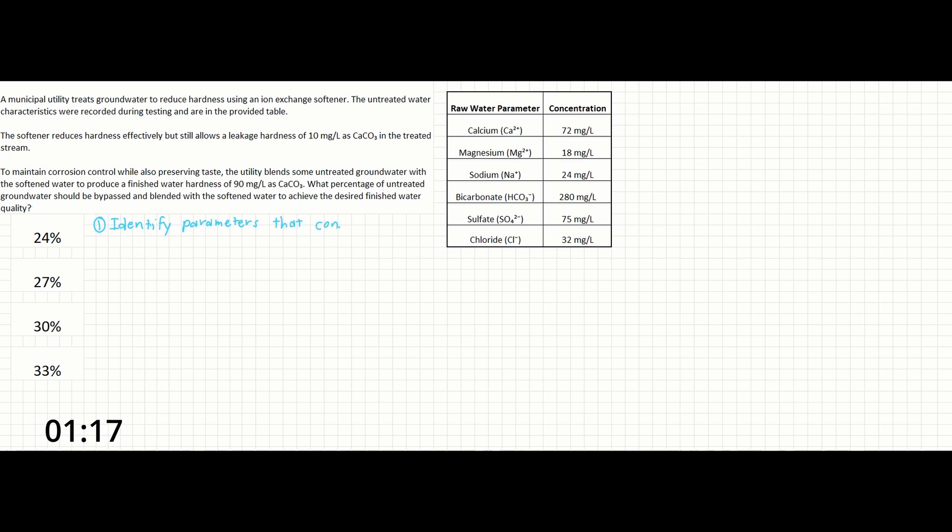Hardness in water is caused mainly by two ions, calcium and magnesium. These are naturally present in groundwater and surface water, and they're the reason for that chalky buildup on faucets or the need for extra soap. So in this problem, we are going to be pulling out the values for calcium and magnesium.